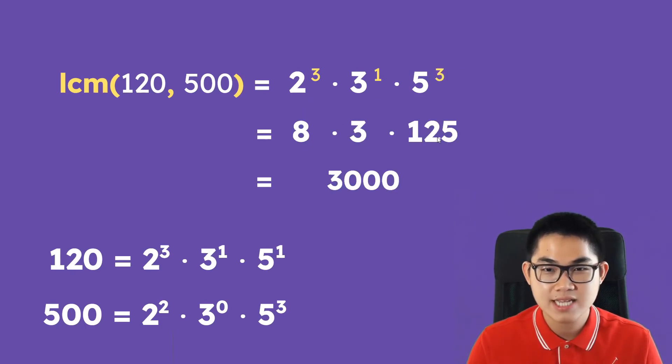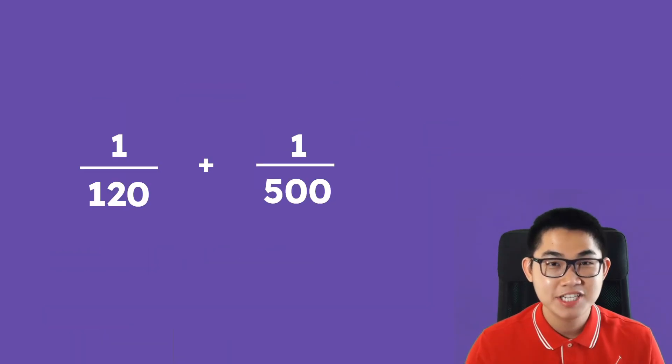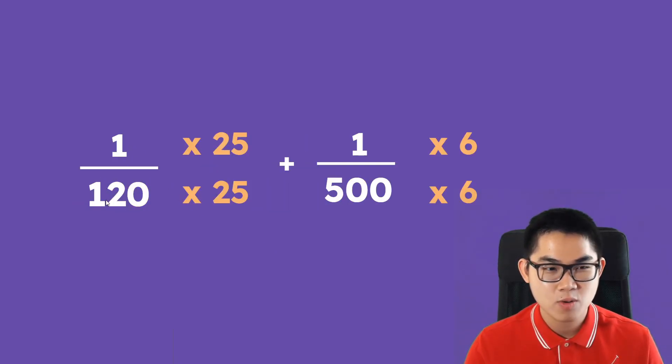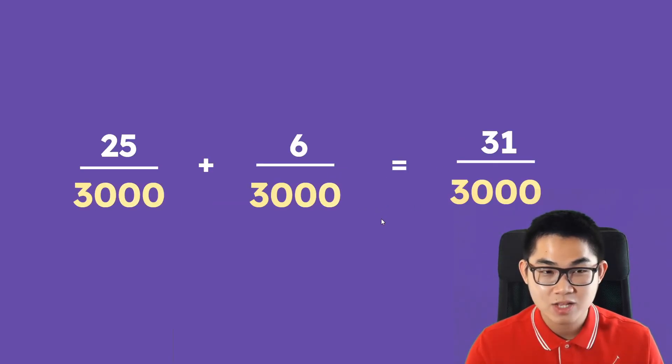The LCM is very useful when it comes to determining what is the common denominator. Let's say you're adding these two fractions, so the common denominator is going to be 3000, that's the least common denominator. What can we do? Well we take 1 over 120 times 25, so this will give you 3000, and 500 times 6 will also give you 3000. So you end up with this and 25 plus 6 is going to be 31 over 3000.